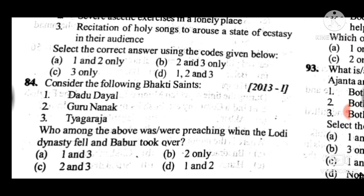Question 84: Consider the following Bhakti saints. Answer to question 84 is B: only the 2nd statement is correct — who among them was preaching when the Lodi dynasty fell and Babur took over? At that time only Guru Nanak was present; the other two were not relevant at that time. So statement 2 is correct.